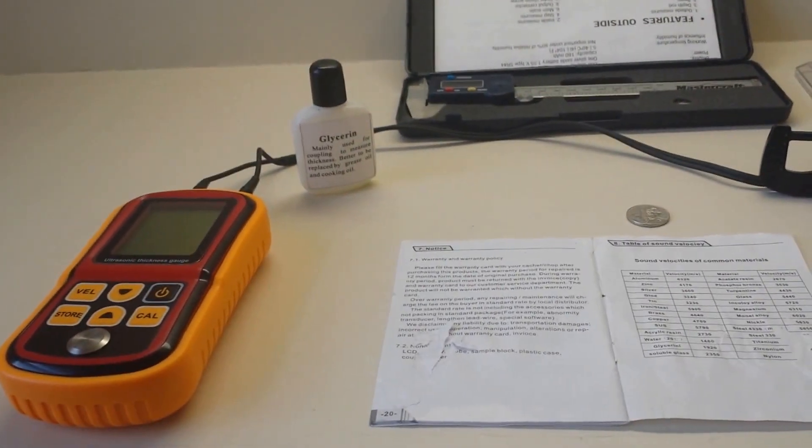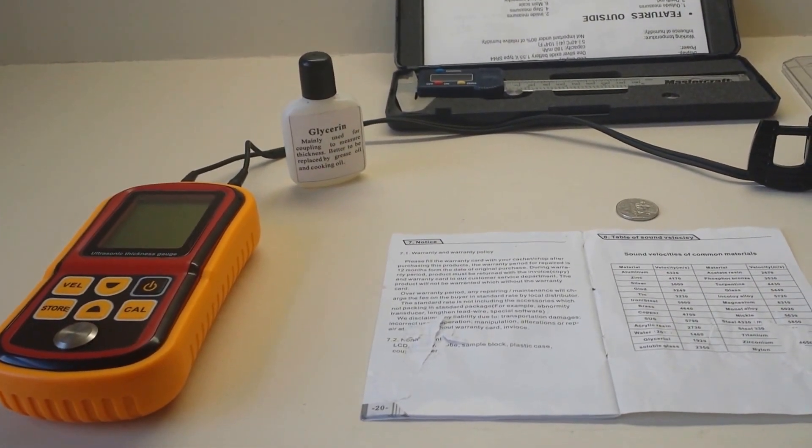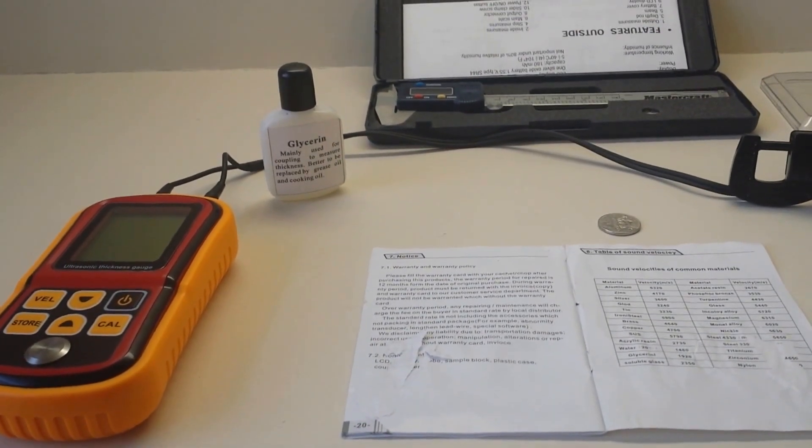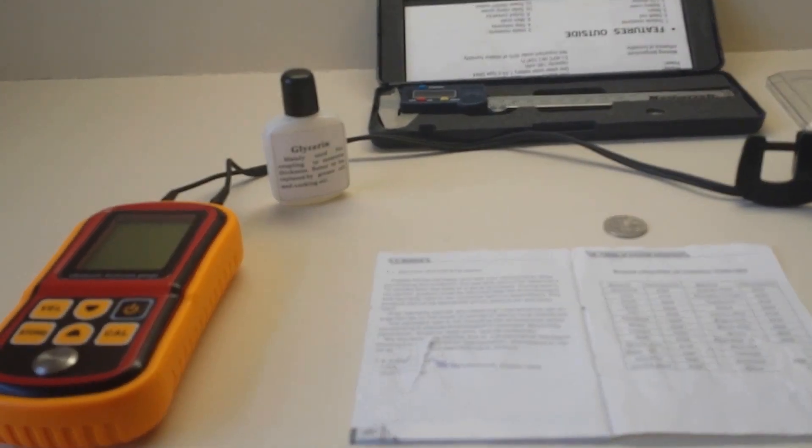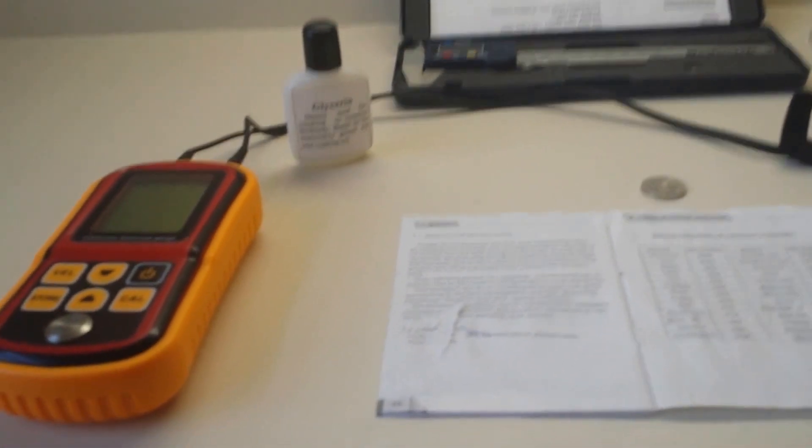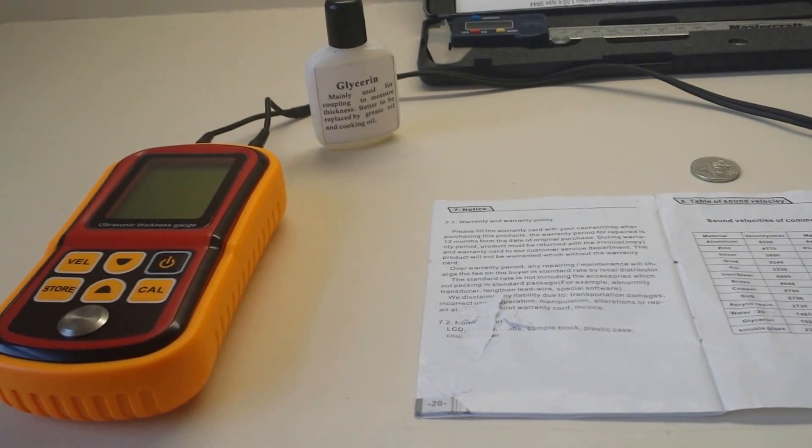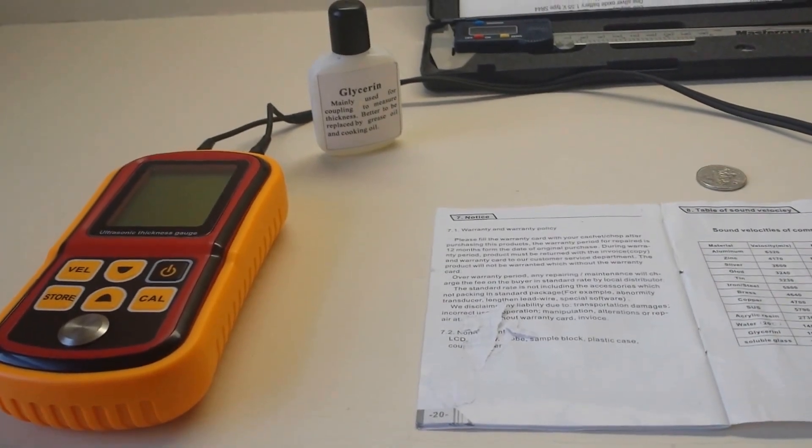I just want to do a short video on how to use an ultrasonic thickness gauge to verify the type of material that's in your coins. This could be used on any type of coins such as gold, silver, or nickel coins.